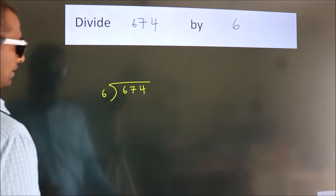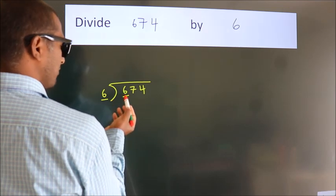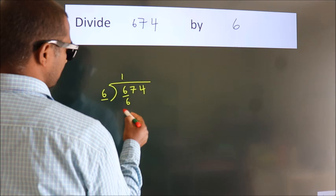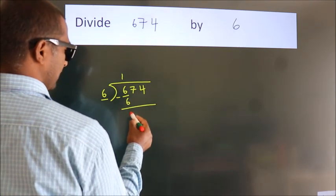Next, here we have 6, here 6. When do we get 6? In 6 table, 6 once, 6. Now, we should subtract, we get 0.